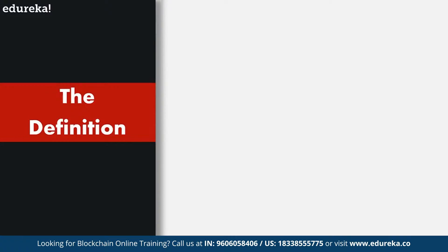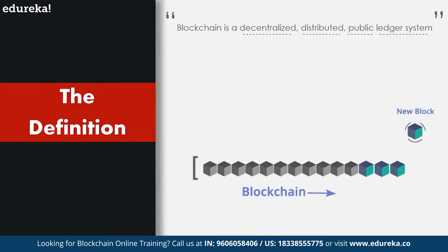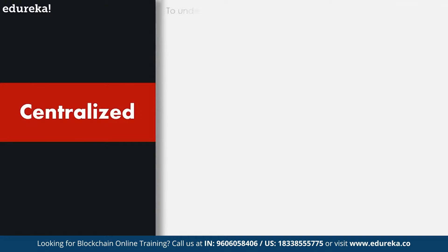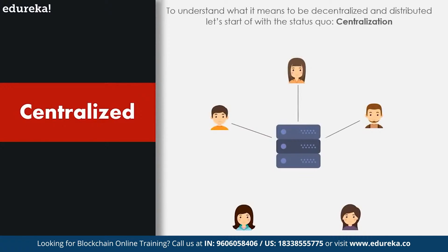Let's start with a simple definition of blockchain technology. Blockchain is a decentralized, distributed, public ledger system. Now let's break down the definition and understand each and every technical term. The first few technical terms we encounter are decentralized and distributed. To understand what it means to be decentralized and distributed, let's start with the status quo — that is, centralization. Any organization or network where decisions are made by a chosen group of people is a centralized system.